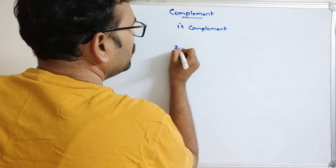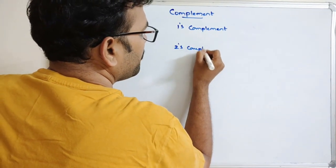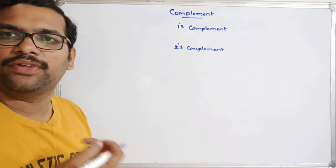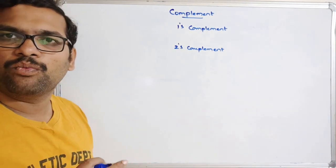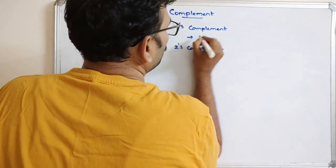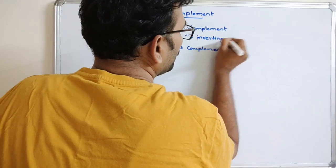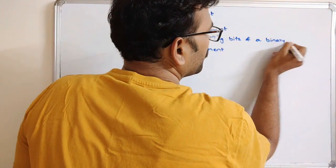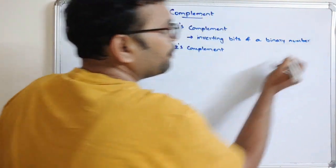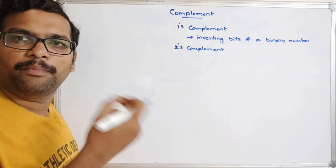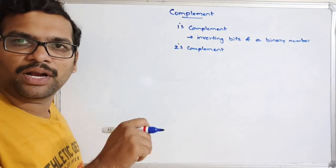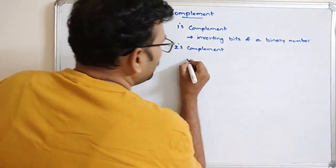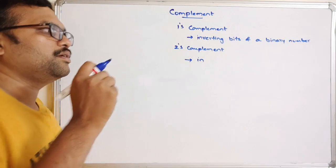So what is 1's complement? If you consider any binary number and invert the bits of that binary number, we call that the 1's complement. That means if the binary number has a 1, we consider it as 0, and if it has a 0, we consider it as 1. Just by inverting the bits we get the 1's complement.